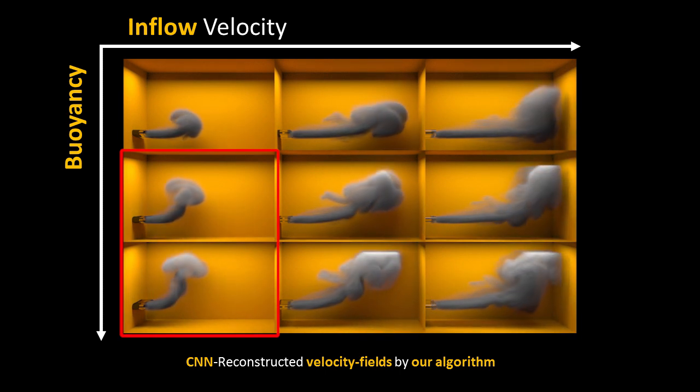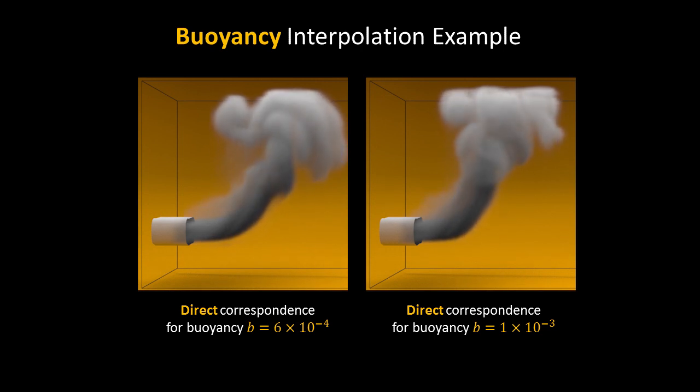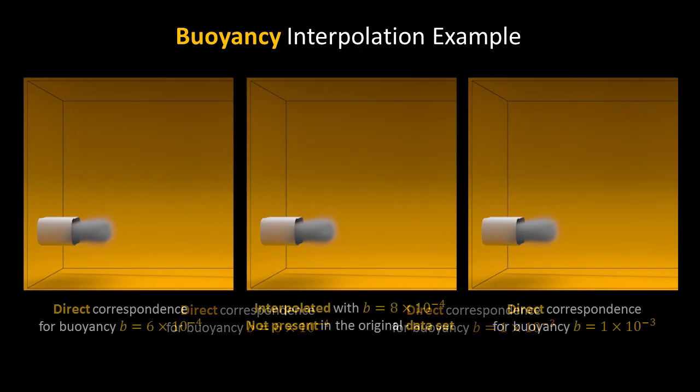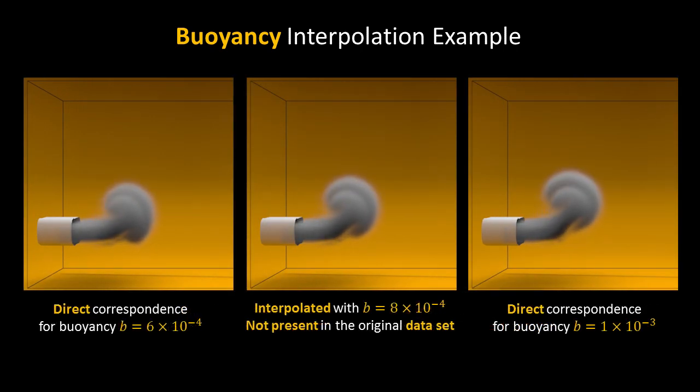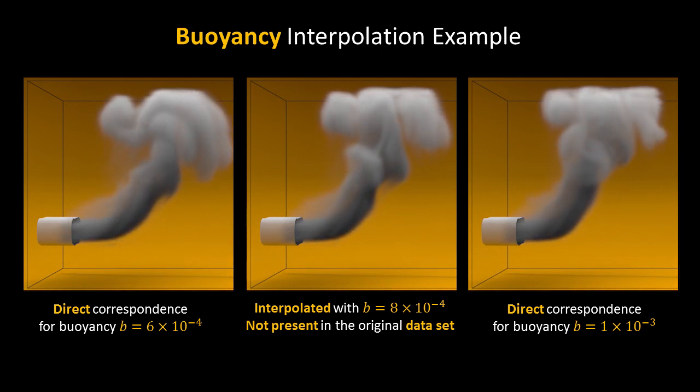Once the network is trained, we can continuously interpolate between training data examples. In this example, left and right videos show CNN reconstructed simulations with direct correspondences on the training dataset. The middle sequence interpolates an intermediary buoyancy value between the two simulations.